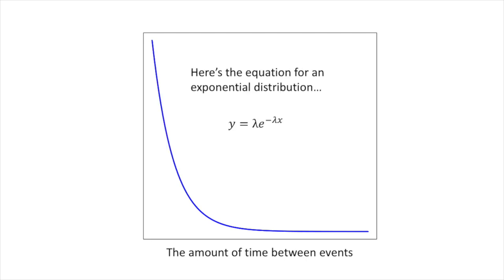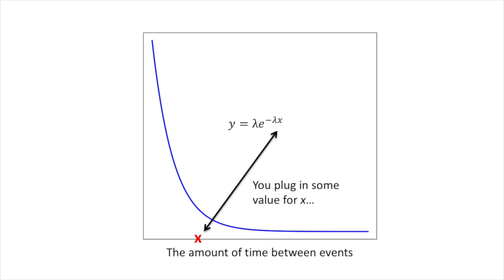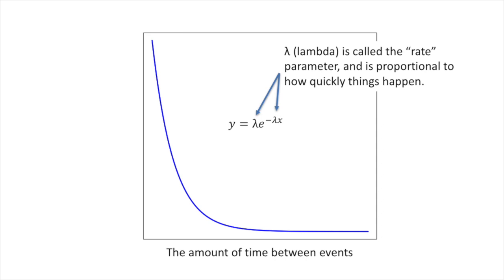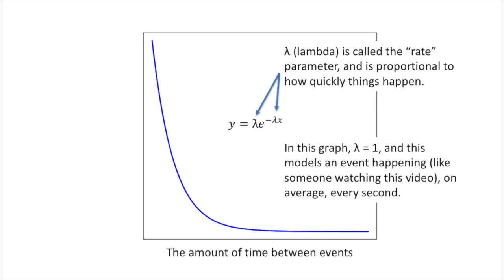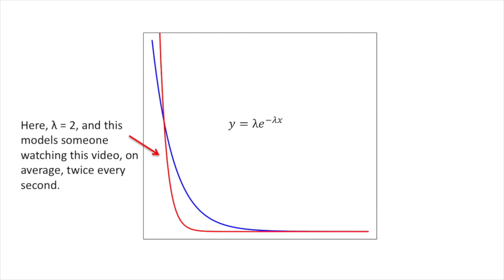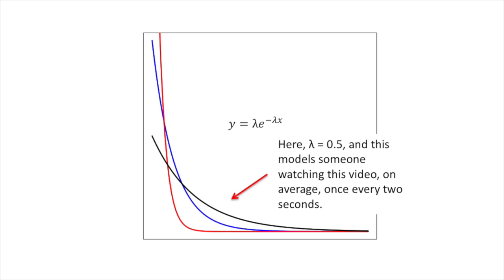Here's the equation for an exponential distribution. You plug in some value for x, and out comes a value for y. Lambda is called the rate parameter, and it is proportional to how quickly things happen. In this graph, lambda equals 1, and this models an event happening, like someone watching this video, on average every second. Here, lambda equals 2, and this models someone watching the video, on average, twice every second. Here, lambda equals 0.5, and this models someone watching this video, on average, once every 2 seconds.